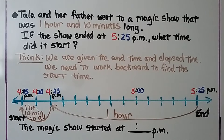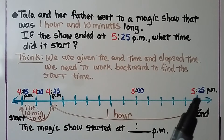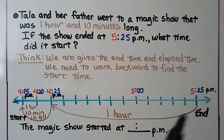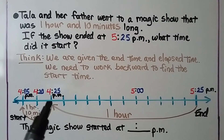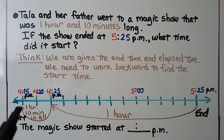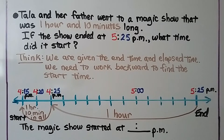Tala and her father went to a magic show that was 1 hour and 10 minutes long. If the show ended at 5:25 p.m., what time did it start? We're given the end time and the elapsed time, so we need to work backward to find the start time. On our timeline, we start at 5:25 p.m. and go back 1 hour to 4:25 p.m. We then go back another 10 minutes from 4:25 p.m. to 4:15 p.m. — that's 1 hour and 10 minutes in all. The magic show started at 4:15 p.m.